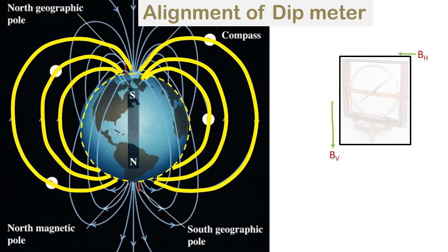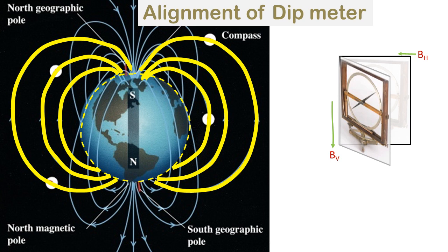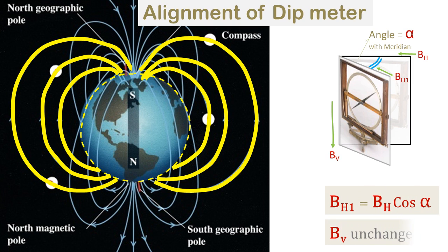Here the magnetic meridian is in the plane of the paper and the dip meter should be placed in the plane of the paper. But if the dip meter is placed at an angle alpha with the meridian, the vertical component is not affected because the direction of the vertical component does not change. But the horizontal component is now computed as BH cos alpha. This is useful in situations where the plane of the magnetic meridian is not known and yet the values of the magnetic field have to be estimated.